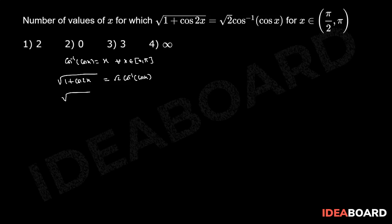This implies √(1 + cos 2x), we can write √(2 cos² x) = √2 into, for x belongs to open interval (π/2, π), cos inverse of cos x will be equals to x.